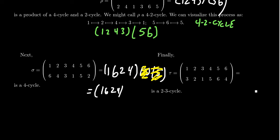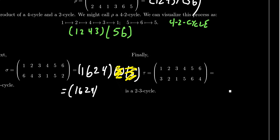Similarly, if we did the same thing for tau right here, we could take 1 goes to 3, 3 goes to 1. So there's a 2-cycle, 2 goes to 2. So since that's fixed, we're just going to ignore it. 4 goes to 5, 5 goes to 6, 6 goes to 4. And so we see that tau here is a 2,3-cycle. Again, we ignore points that are fixed.